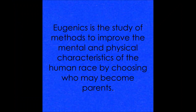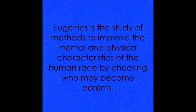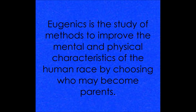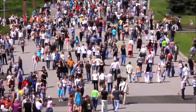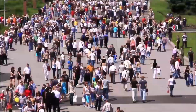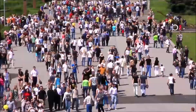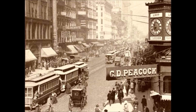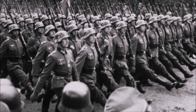What's eugenics? Eugenics is the study of methods to improve the mental and physical characteristics of the human race by choosing who may become parents. This set of beliefs and practices, which aims at improving the genetic quality of the human population, played a significant role in the history and culture of the United States from the late 19th century until U.S. involvement in World War II.